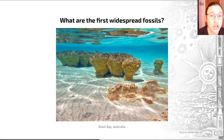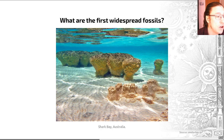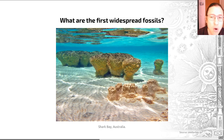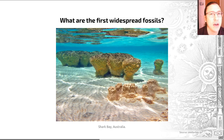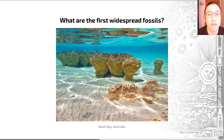Stromatolites are found today in Shark Bay in Australia, for example. In modern ecosystems, stromatolites only really develop in environments that nothing else can survive in — such as hypersaline, very salty environments, or environments which are too hot to host widespread forms of life other than bacterial.